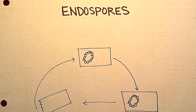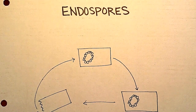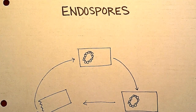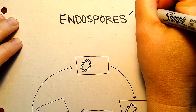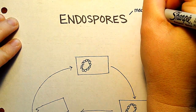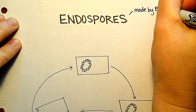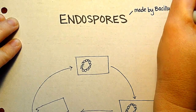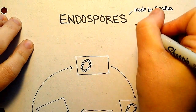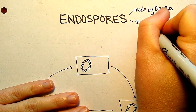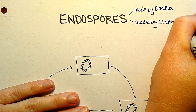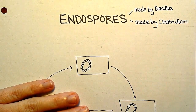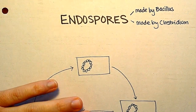This video is on endospores. There are basically two important genera that can make endospores: Bacillus and Clostridium. Now there are other endospore-forming microbes for sure, but these are the two medically significant ones.